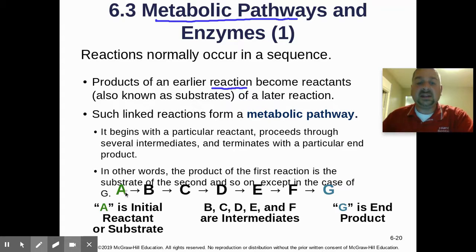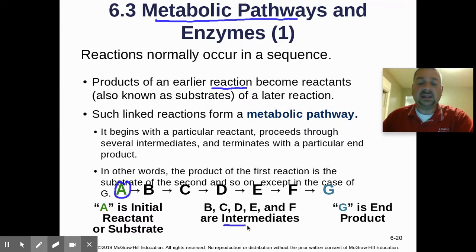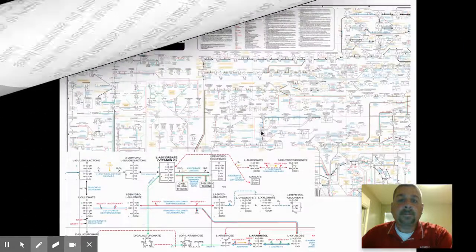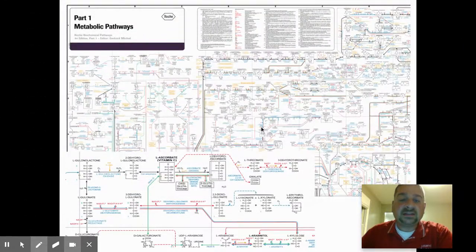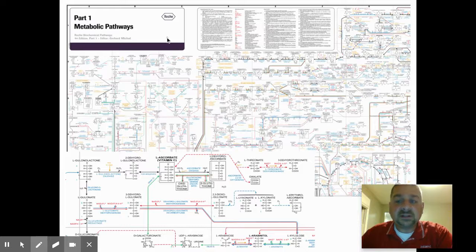So there are all these intermediates. We have the beginning — the initial reactant or substrate — and in our cells it's turned into substrate B, then C, then D, E, F. Those are all intermediates to get to the final product, which is G. This is just a partial example I'll show you in class — it's one of my favorite posters.